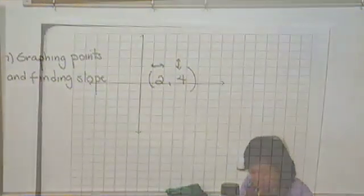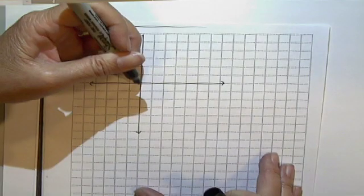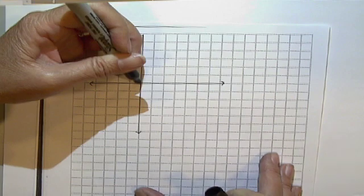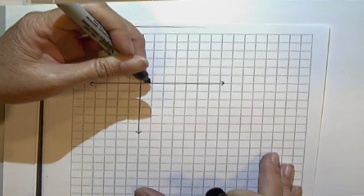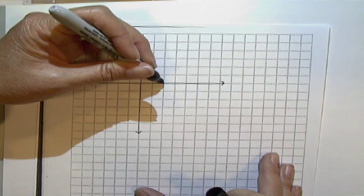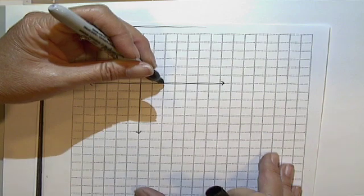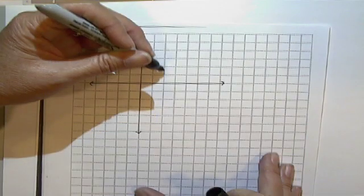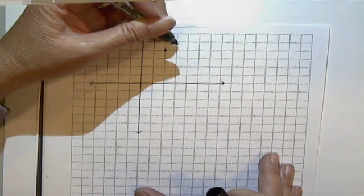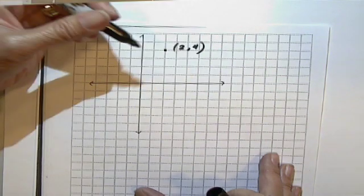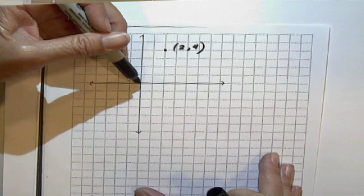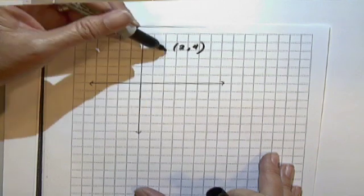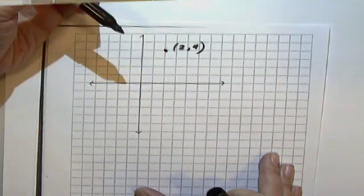We always start counting from this part here, which is called the origin. So from here, since our first number was a 2, we're going to go to the right 2. We're just going to pause there. We're not going to make a dot or anything. We're just going to rest for a moment and look at our second number, which is a positive 4. So we're going to go up 4: 1, 2, 3, 4. And this would be our final location. That's the point (2,4). So again, this means go right 2, up 4, and then make a mark.